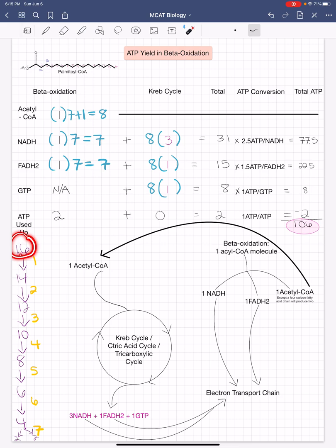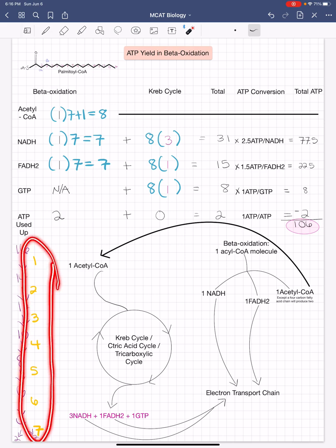Each time it goes from 16 to 14 is one cycle of beta oxidation. From 14 to 12 is two cycles of beta oxidation. From 12 to 10, it's going to be three, and so forth. And so if we add these up, we get seven cycles of beta oxidation.